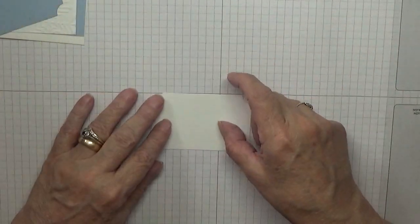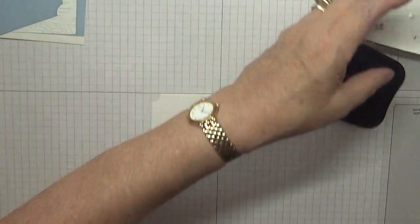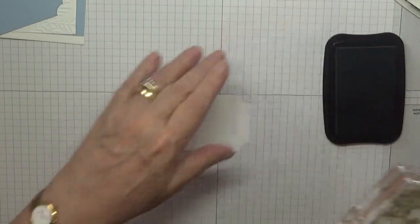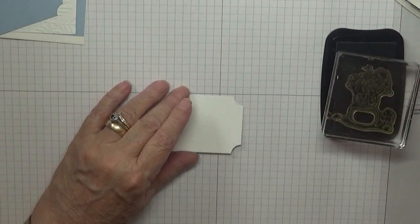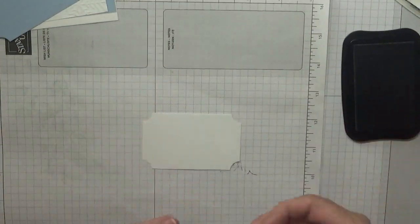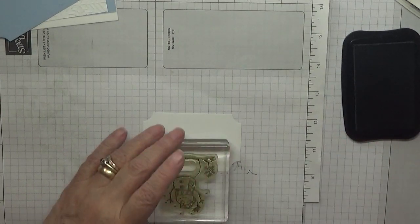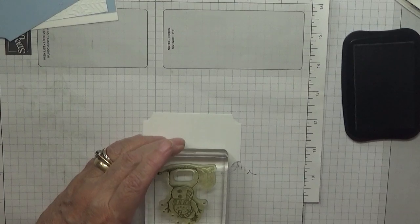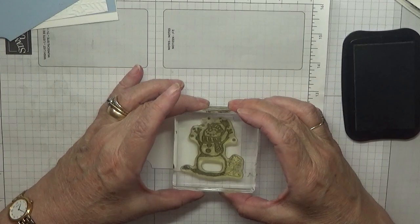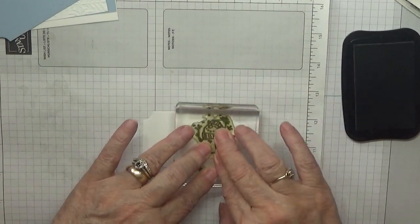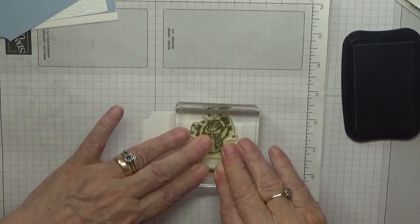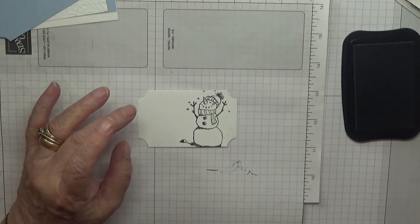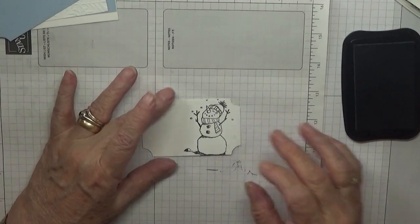All we're going to do is stamp on this. So what we're going to do is with our Memento, on my yellow stain stamp, and we're going to stamp. Let me get a bit of scrap because I don't want that tree. I don't want that tree on my image. So we're going to stamp that down there.